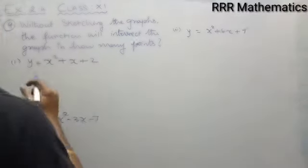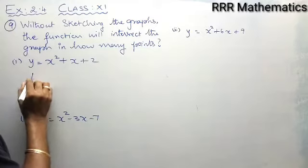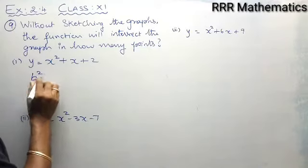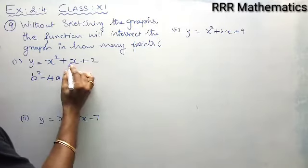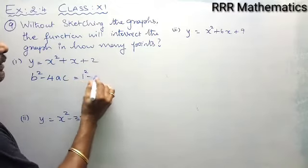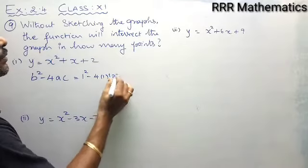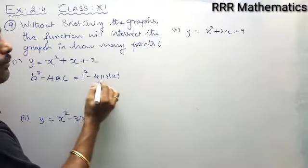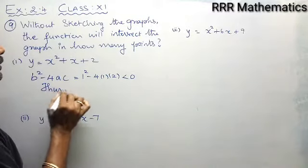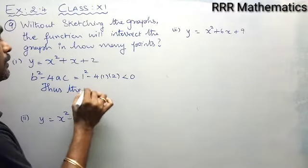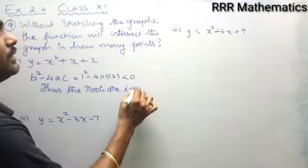See, the very first one: y = x² + x + 2. In this case, your discriminant value b² - 4ac equals b² — what is b? The coefficient is 1, so 1² minus 4 times a (coefficient of x², which is 1) times c (which is 2). So the value is 1 minus 8, which is less than 0. So in this case, the roots are imaginary.